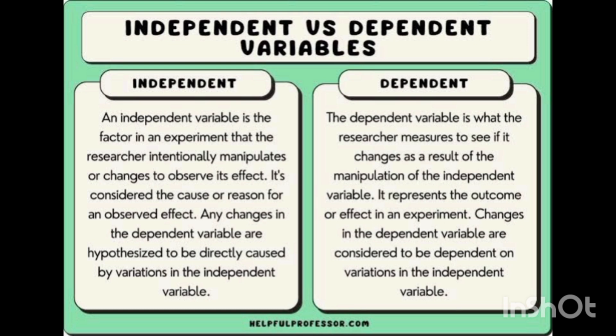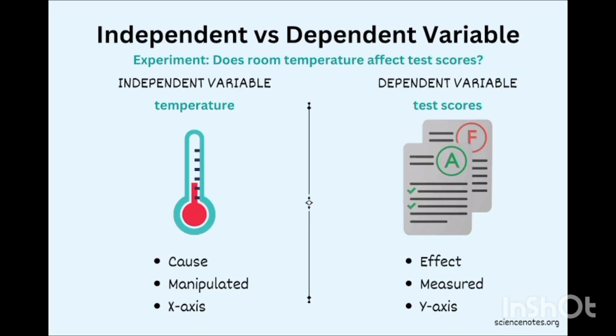The dependent variable represents the outcome or effect in an experiment, and changes in the dependent variable are considered to be dependent on the variations in the independent variable. This definition explains the difference between both of them.